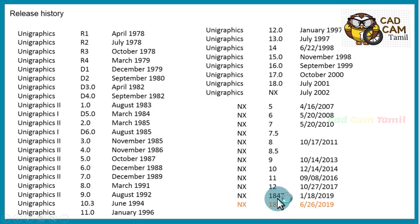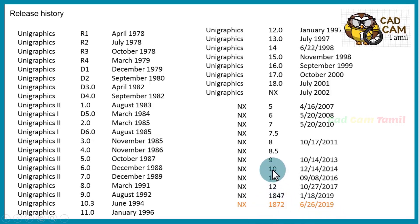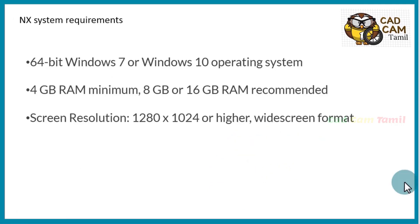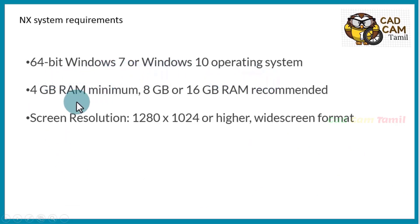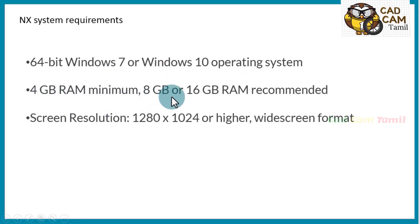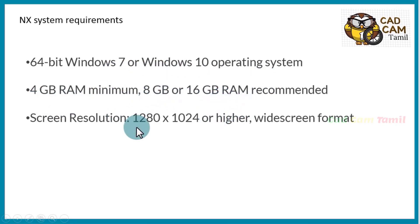The new version NX 11 is released. Here we will use NX 8 to 11. This is a 64-bit software requiring 4GB RAM minimum, and 8GB or 16GB recommended. The screen resolution is 1680x1024 in the higher Windows screen format.